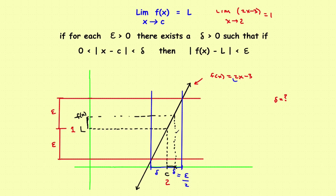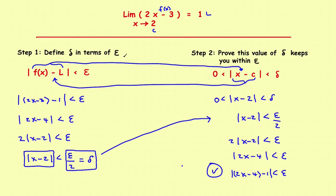So to summarize the two steps: step one, plug in the numbers and manipulate |f(x) − L| < ε into the form |x − c| < something to define delta in terms of epsilon. Step two, take that value of delta and manipulate |x − c| < δ back into |f(x) − L| < ε. If you can do that, you've proved that this value of delta works in the epsilon-delta definition.